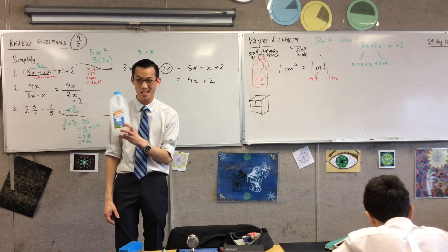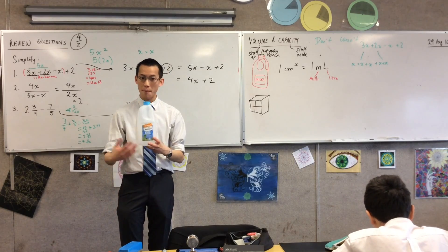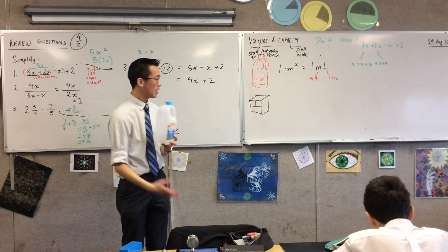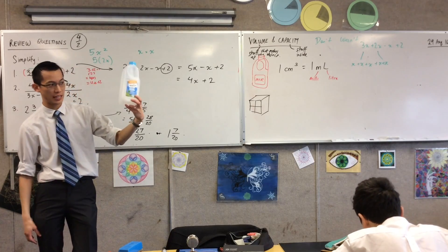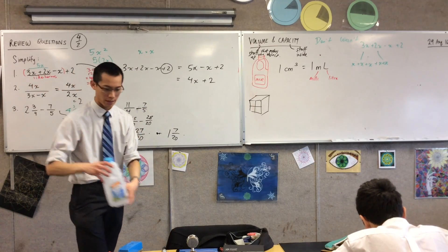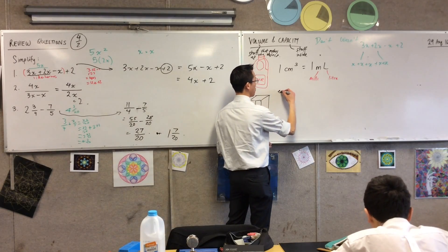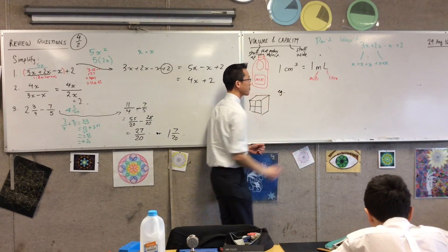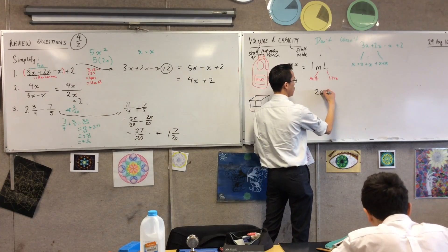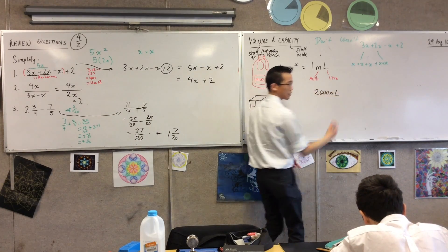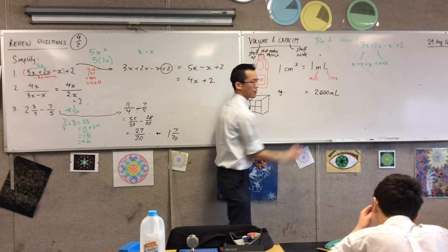Two thousand. Very good. A millilitre is one thousandth of a litre, and if you've got two litres in here, there must be two thousand of them in there. So, if this bottle has two thousand millilitres in it, what must its volume be?